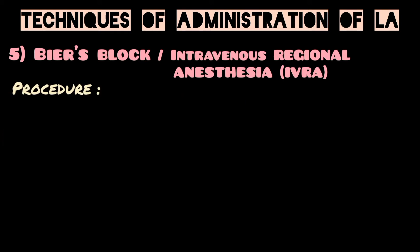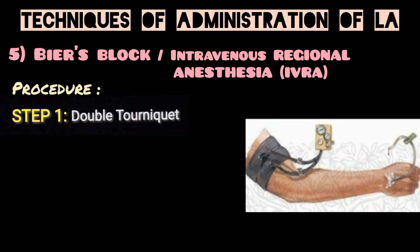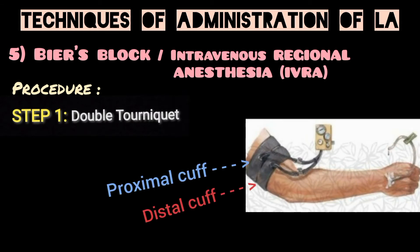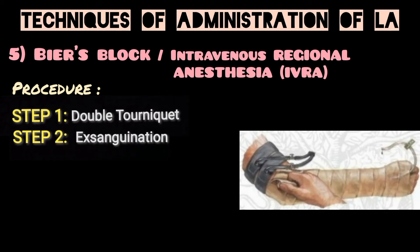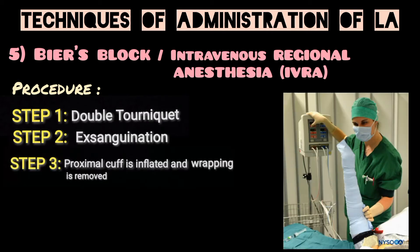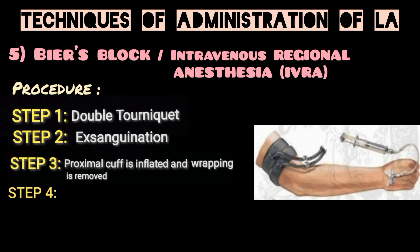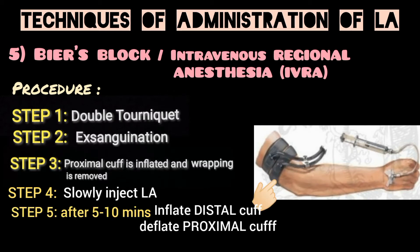The procedure includes several steps. First, a double tourniquet is placed with a proximal and distal cuff where the procedure is to be performed, separating this area from the rest of the circulation. Then the arm is exsanguinated — meaning as much blood as possible is removed — by wrapping it with a tight elastic dressing and elevating it. Once this is done, the proximal cuff is inflated, the wrapping is removed, and the local anesthetic is slowly injected.